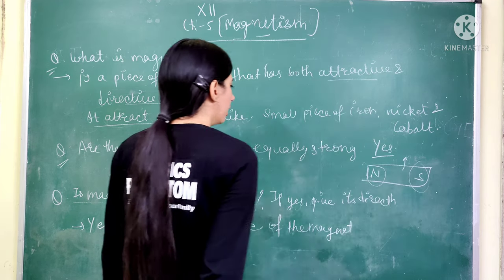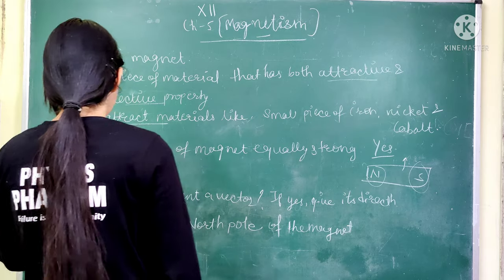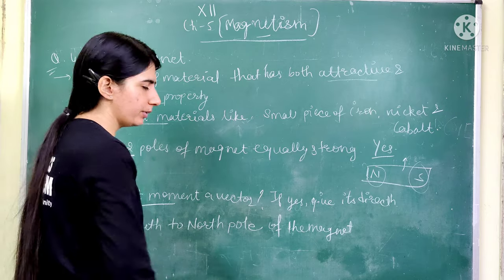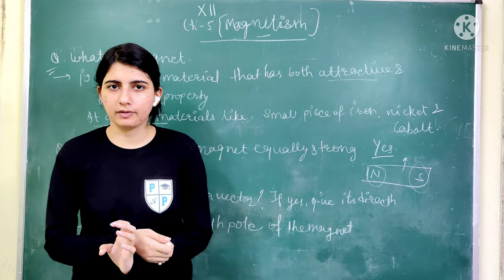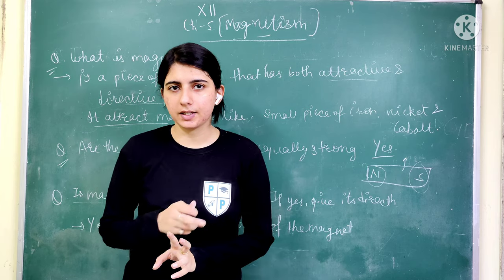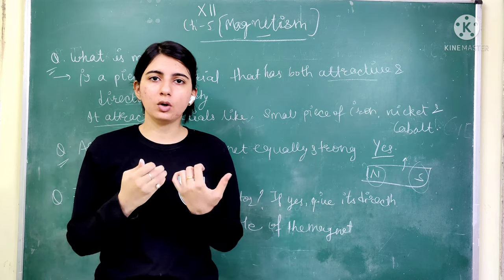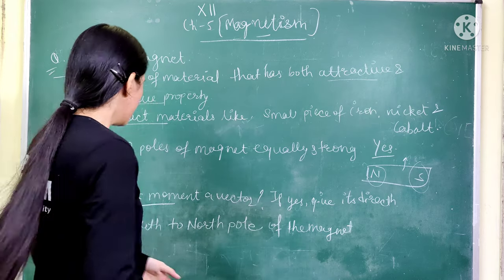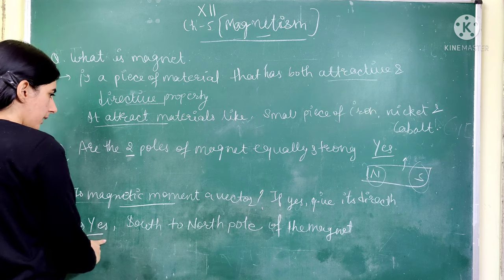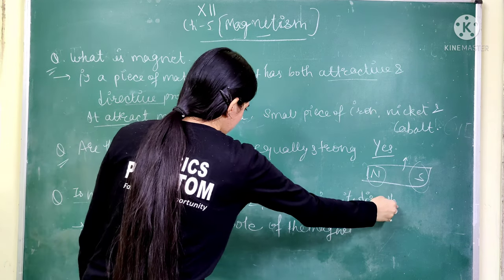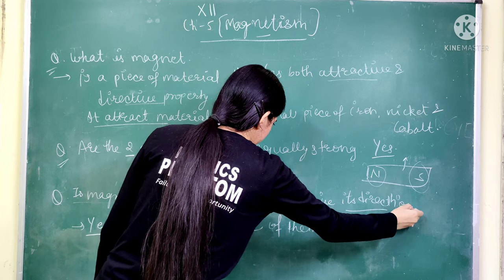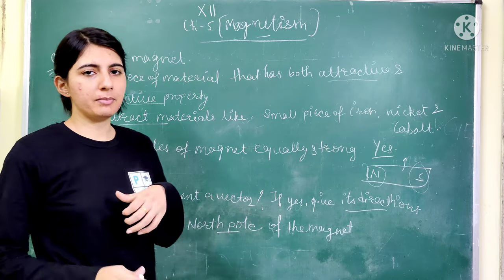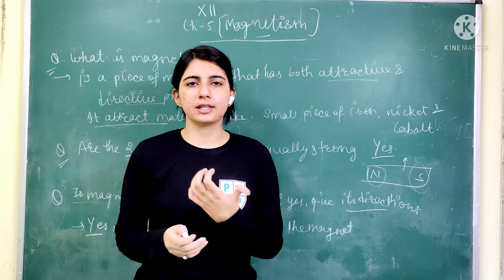Next question: is magnetic moment a vector? If yes, give its direction. The answer is yes, magnetic moment is a vector quantity. Now, what is its direction? The direction is from the south pole to the north pole of the magnet — that means from the south side to the north side.